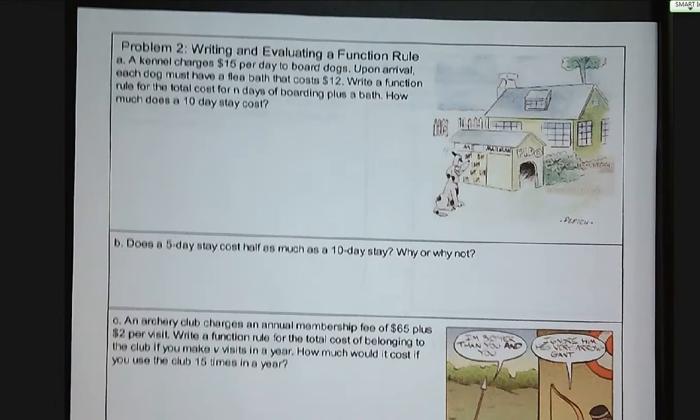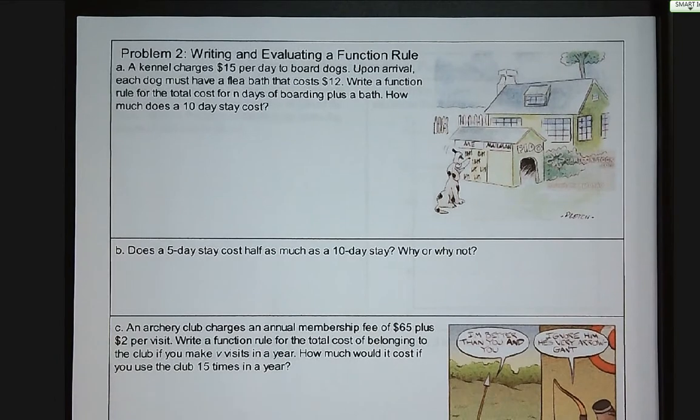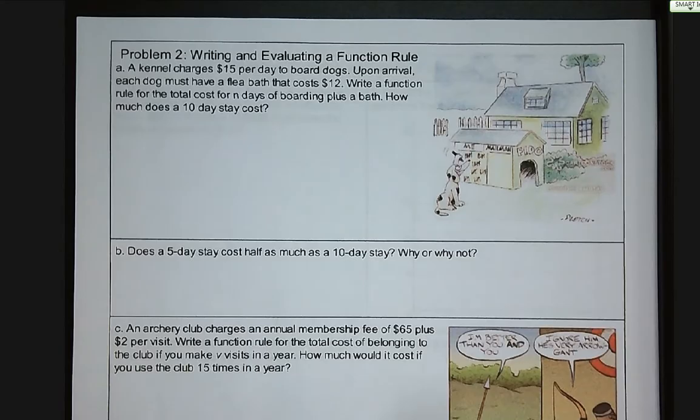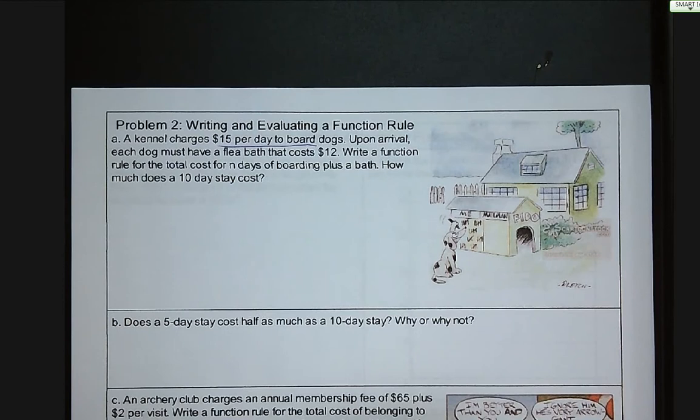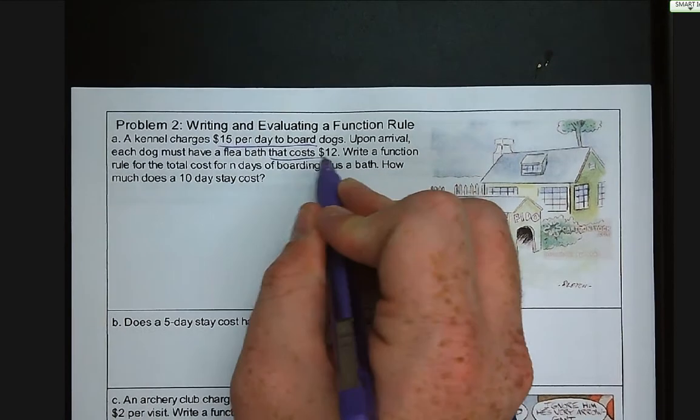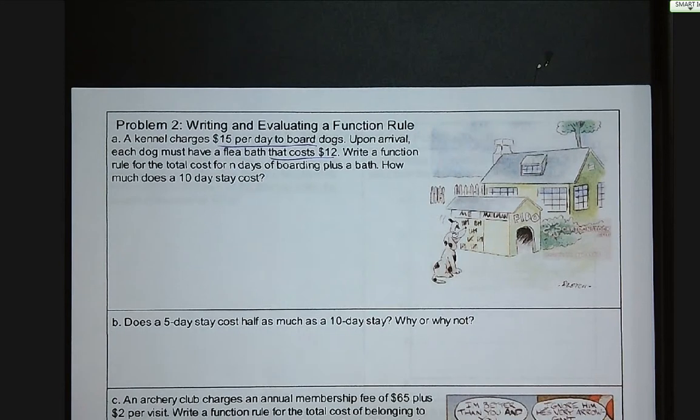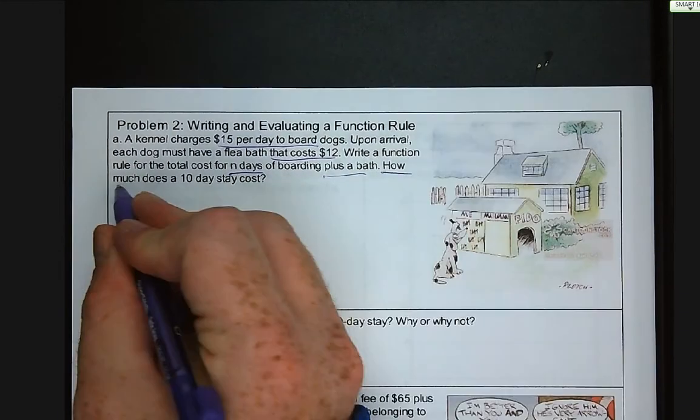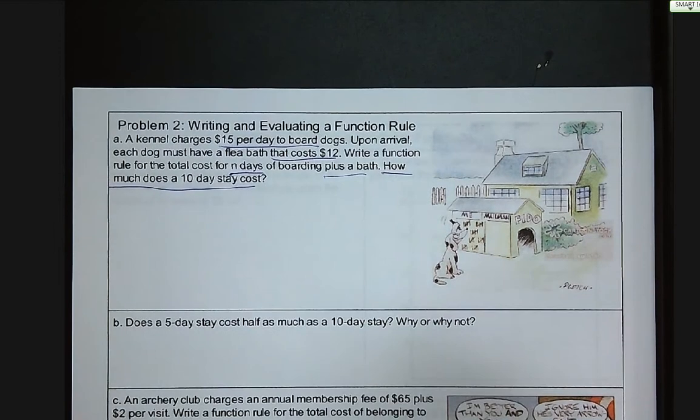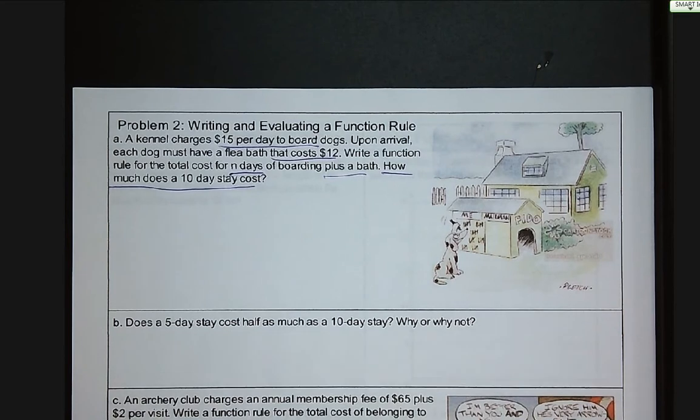Moving on to problem number two, writing and evaluating function rules. Now we're going to take the next step. We're going to write the function rule, and then we are going to use it to find the value of something. So a kennel charges $15 per day to board dogs. Upon arrival, each dog must have a flea bath that costs $12. Write a function rule for the total cost for n days of boarding plus a bath. How much does it cost for a 10-day stay? You'll notice I'm underlining important pieces of information in our story. I'm looking for numbers that are relating to our cost. So our function rule: